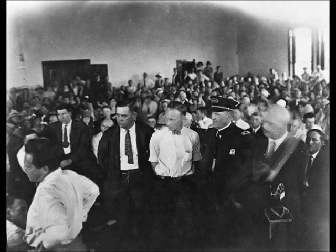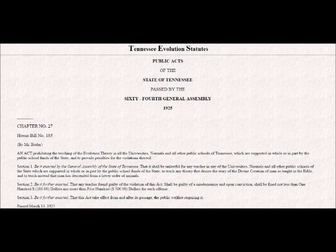The lawsuit centered around a 25-year-old high school science teacher named John Scopes. He broke the law of the Butler Act, which was an act prohibiting the teaching of the evolution theory in all universities, normals, and all other public schools of Tennessee which are supported in whole or in part by the public school funds of the state, and to provide penalties for the violations thereof.